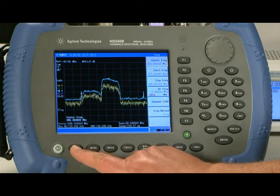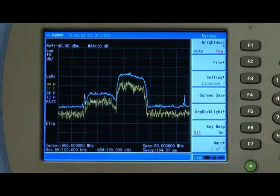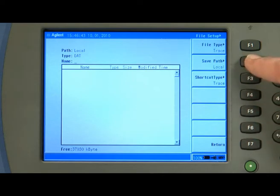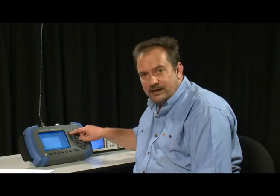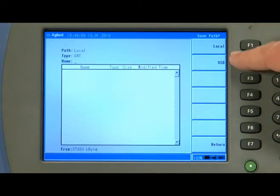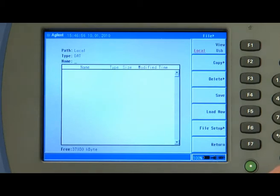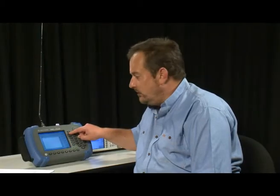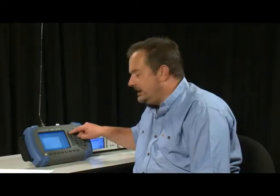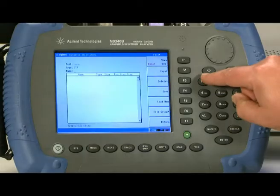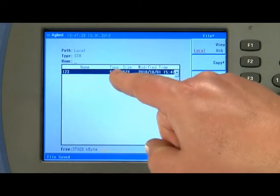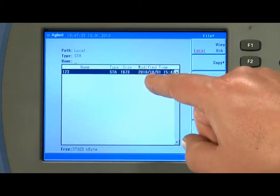So let's call up the file save menu by pressing the system button and then we are going to select the internal memory so I am going to press file and then file setup and the save path is currently set to local which is what I want. But if I wanted to store to the USB memory stick I could change that to USB but we will leave that as local for now. Then we are going to select the file type so we press file setup and the kind of file we want to save here is an instrument state so that I can recall it later if I wish to. So I will press the state button. Then we can enter a file name using the numeric keypad. So I will call this 123 and then I will press save and that state has now been saved into the internal memory. You can see that here the file name is 123 it is a state file and it was saved on the 1st of October 2010.